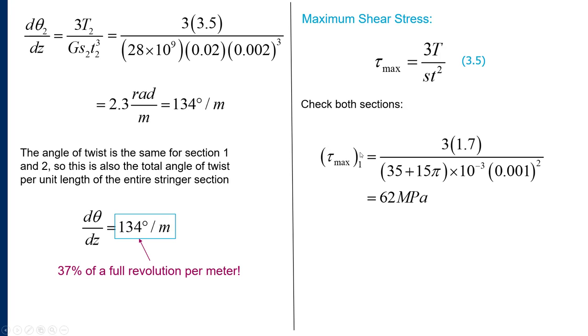If we look at section 1, 𝜏_max in section 1 is 3 times the torque of 1.7 newtons per meter divided by our total length of 35 + 15π times 10⁻³ meters, and our thickness was 0.001 meters squared. We substitute all of this in and get 62 megapascals.